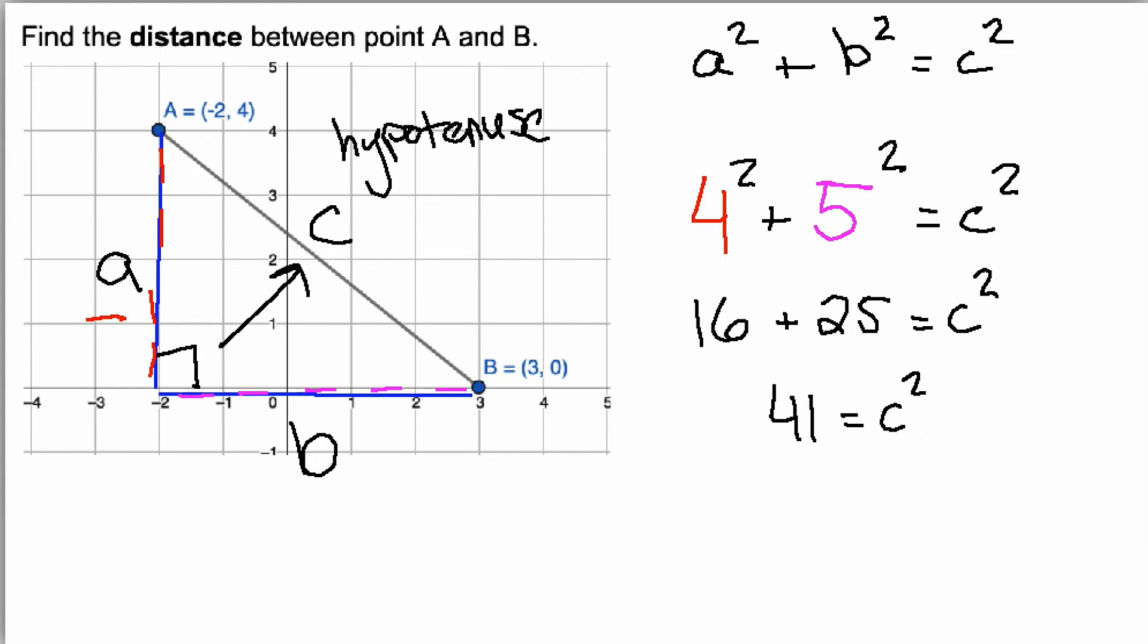This equals 41. And now, what I'm going to do is take the square root of both sides. This means that my final answer will be C is equal to the square root of 41.